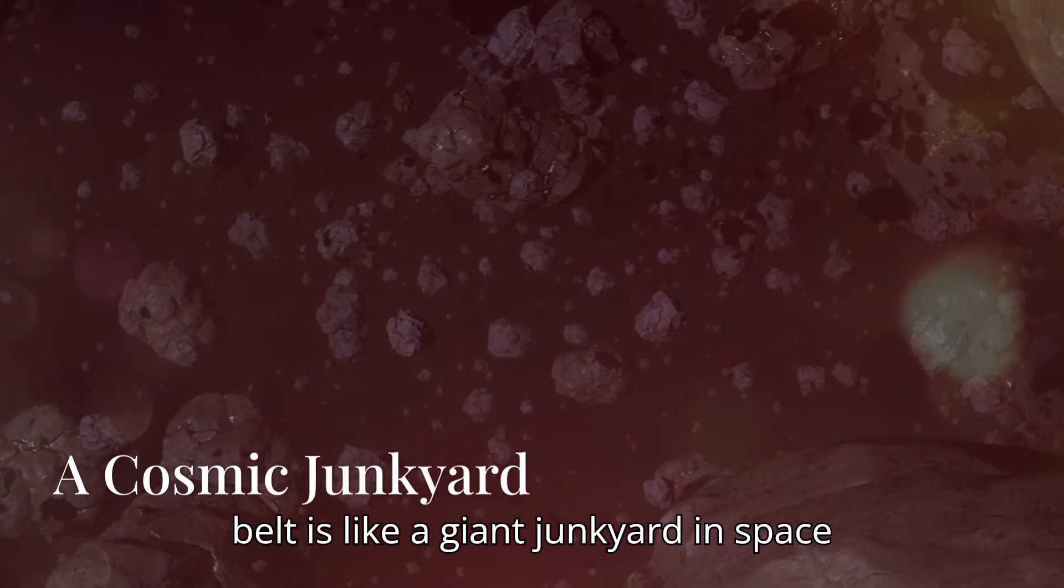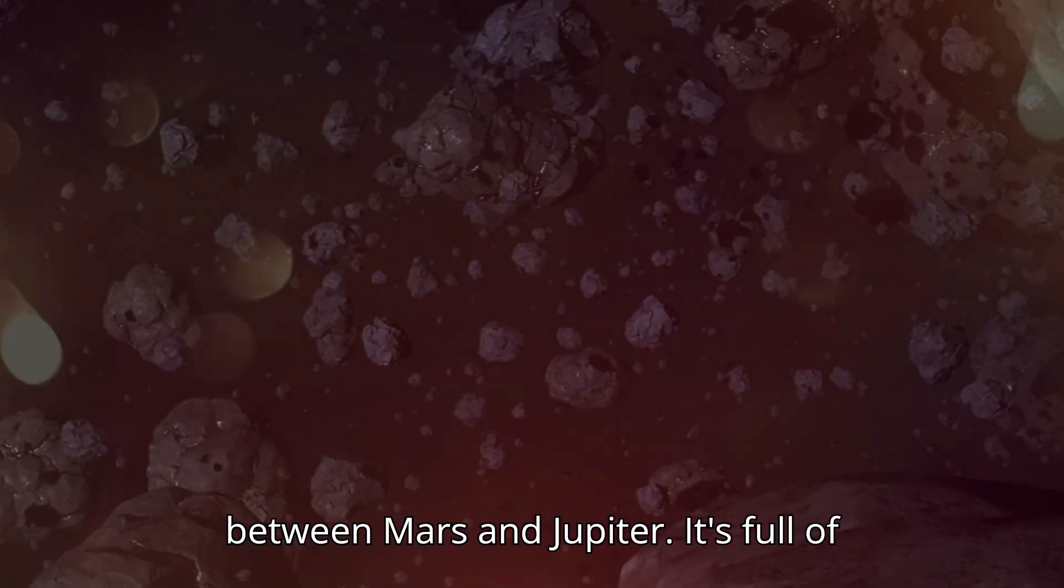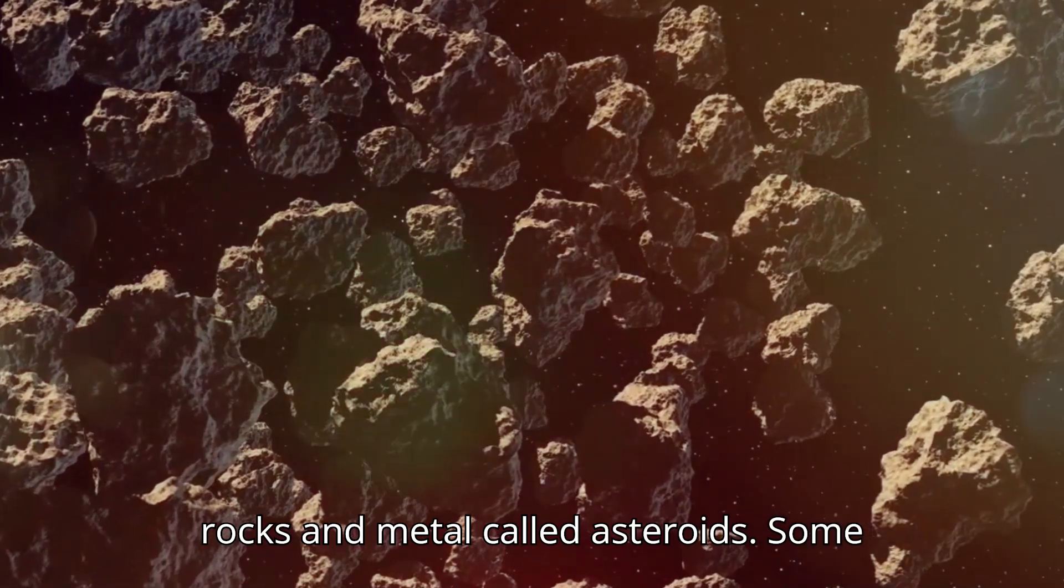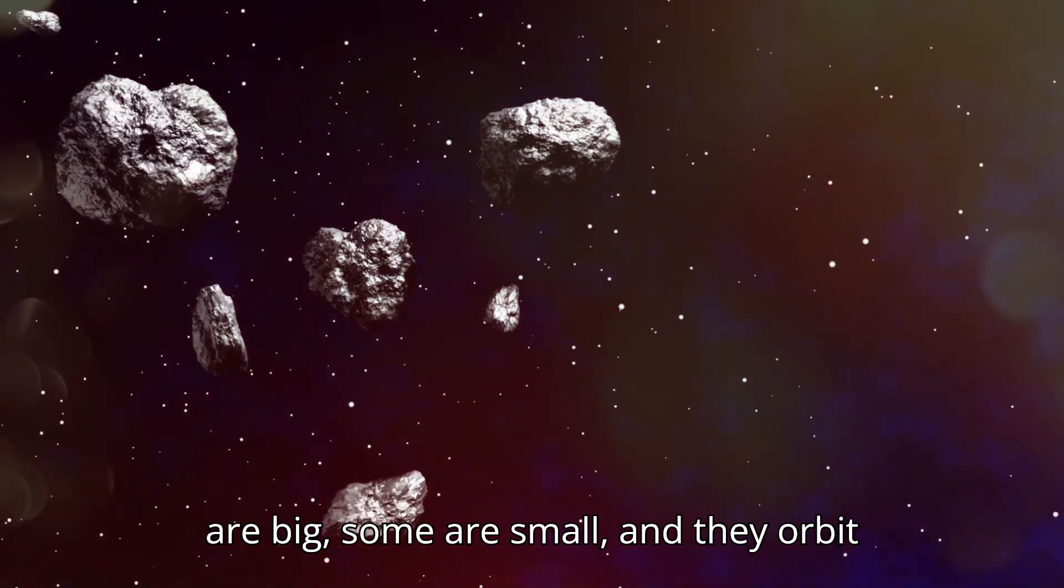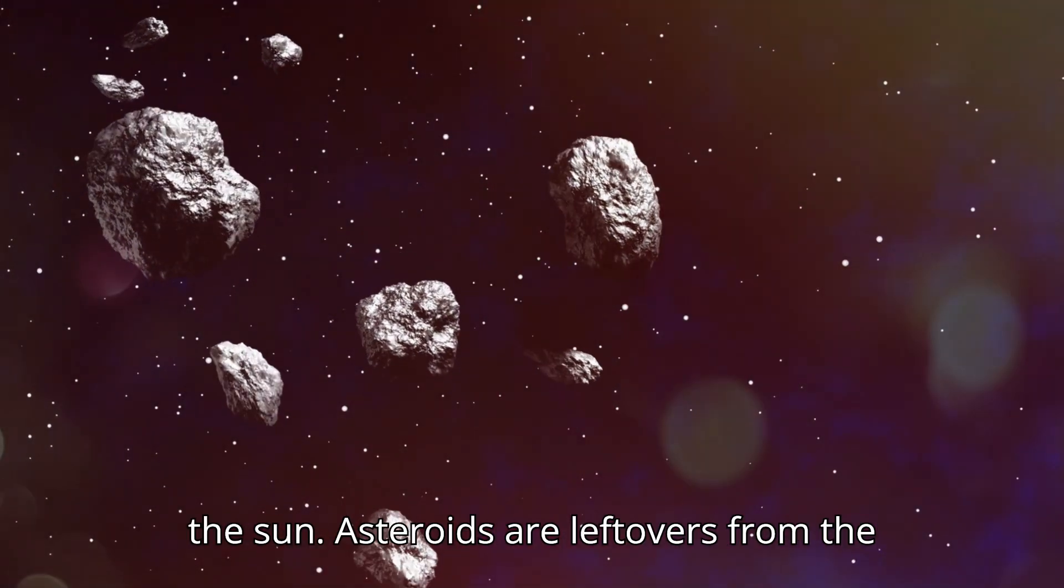The asteroid belt is like a giant junkyard in space between Mars and Jupiter. It's full of rocks and metal called asteroids. Some are big, some are small, and they orbit the sun.